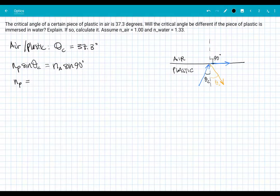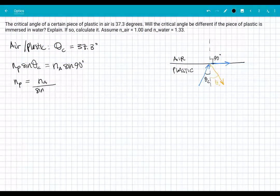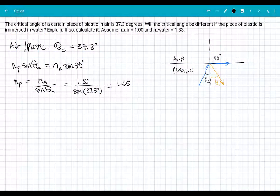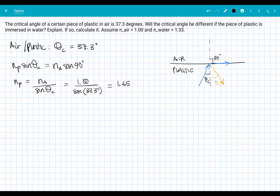So I can then solve for the n value of plastic. It's going to be the n value of air divided by the sine of the critical angle, and that gives me 1 over the sine of 37.3 that was given, so I get 1.65 here. That is my n value for plastic. And remember that these n values, they don't have units, right? It's basically a ratio, so we consider it's more like a coefficient.